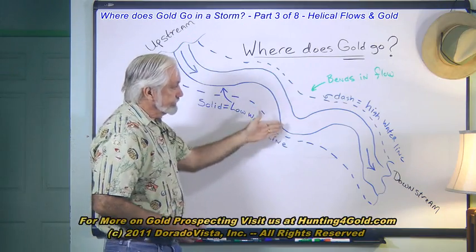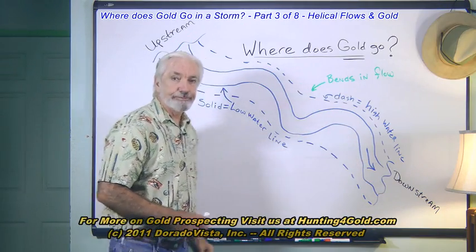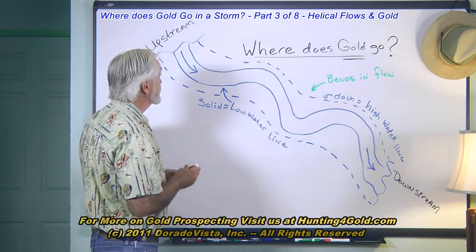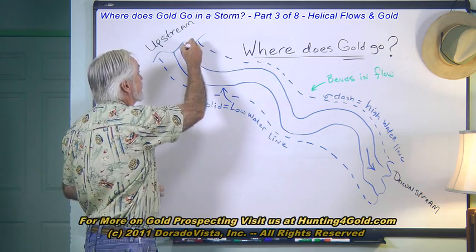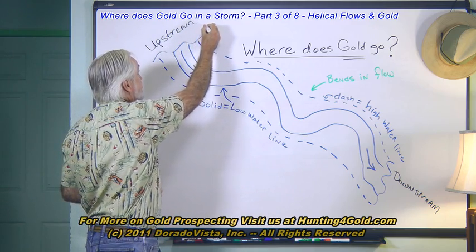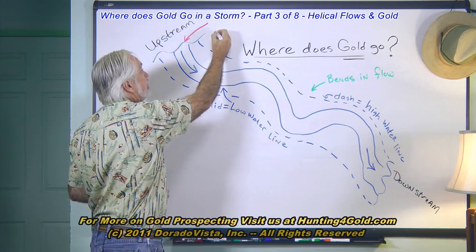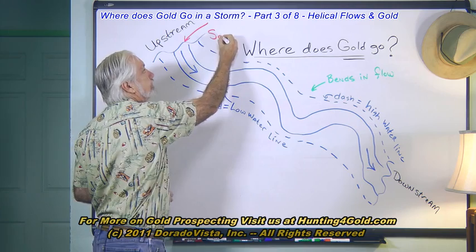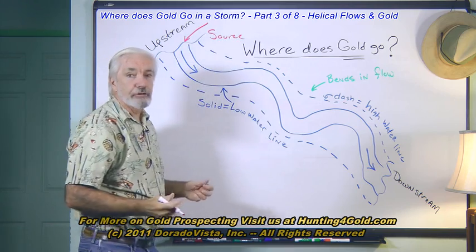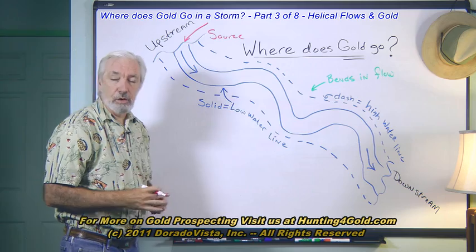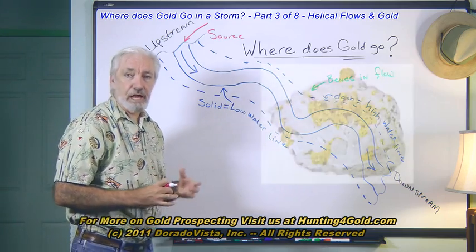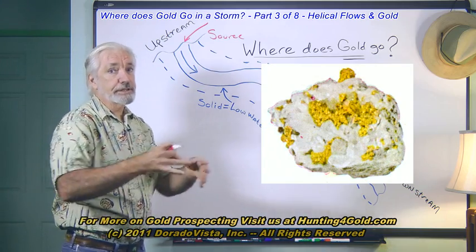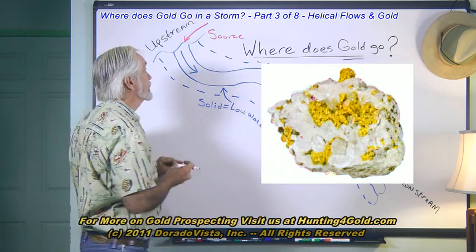As the water meanders downstream and follows this S curve, something interesting happens during high water: the gold tends to be deposited somewhere upstream — we'll just call it some mysterious place called the source. That could be another placer deposit, another stream, or a lode deposit bordering on the stream or feeding into it. Either way, we'll just call it the source.